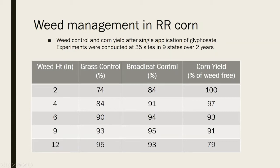We had 84% broadleaf control — and we would probably be fairly unhappy with that, having a kind of weedy field at the end of the year. But where it really gets interesting is the last column — the percent of the weed-free yield. Compared to just hand weeding the corn all year, we had 100% yield potential when we controlled weeds at two inches tall and never sprayed the rest of the year, even though we had a weedy field at the end, because we protected the corn when it was small.